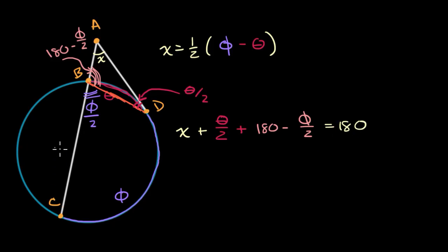Well, there are several things that I can do. I can subtract 180 from both sides. I can add phi over two to both sides. I'm just trying to isolate the x on the left. So add phi over two. And I can subtract theta over two from both sides. Once again, I'm just trying to isolate the x. Minus theta over two.